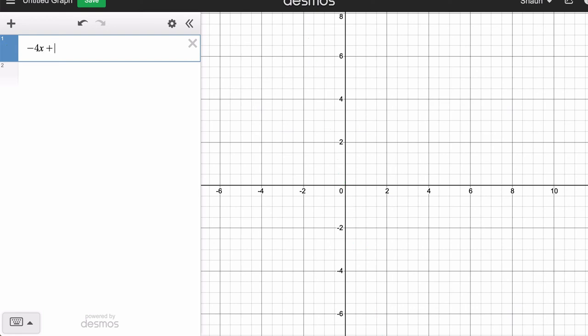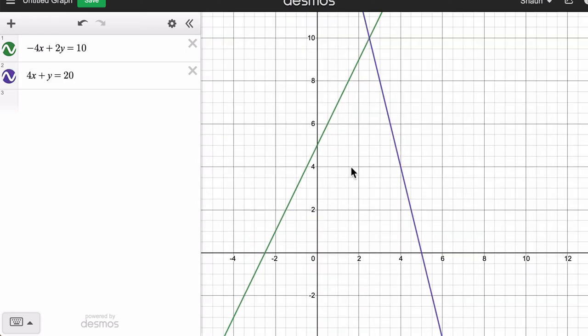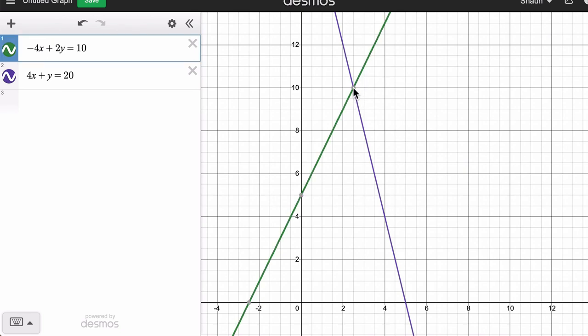So we have negative 4x plus 2y equals 10. And then we had 4x plus y equals 20. Scroll up here. So they do meet at 2.5 and 10. Now, when we added these two equations, we got a new equation.